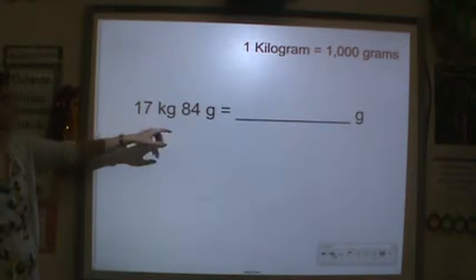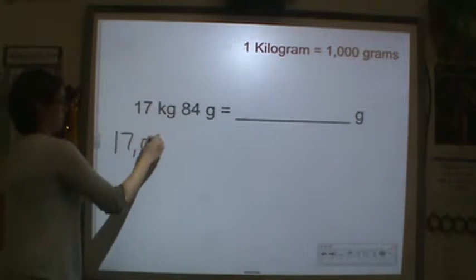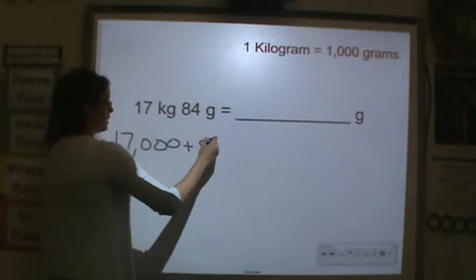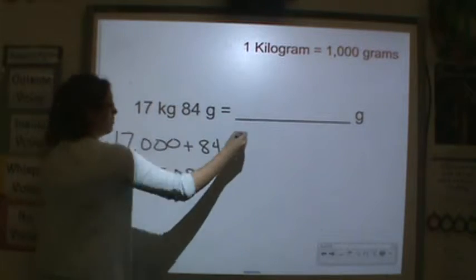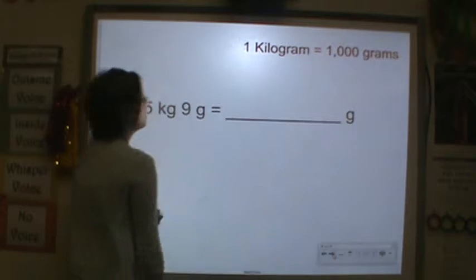17 kilograms plus 84 grams is how many grams? Again, multiply this number by 1,000 so that you're working with grams. You have 17,084.